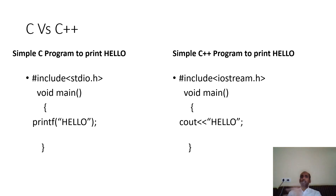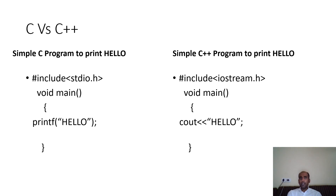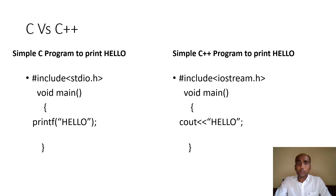Let me compare a small C and C++ program that prints 'Hello' on the output screen. In C, you write: #include stdio.h, then void main, then curly braces, then printf. Whatever you write inside double quotes will be printed as it is.